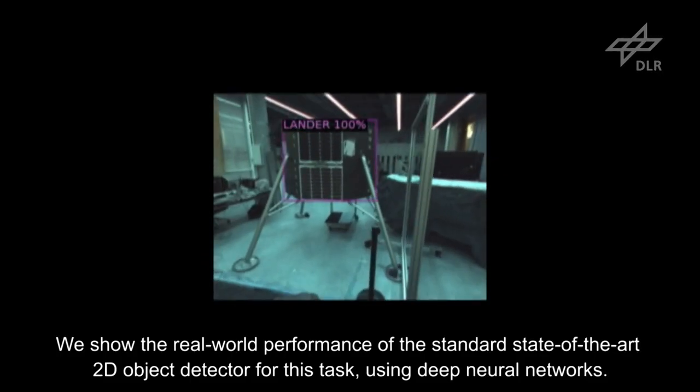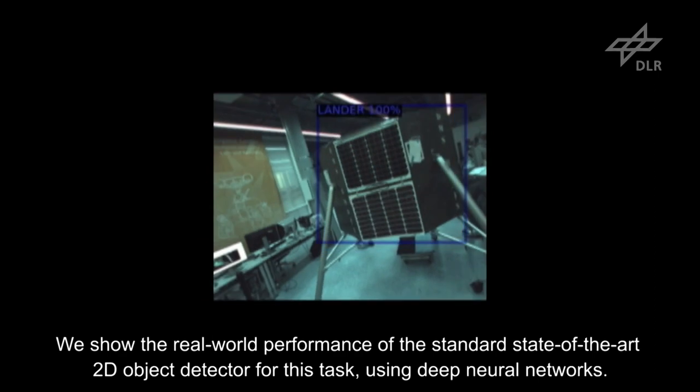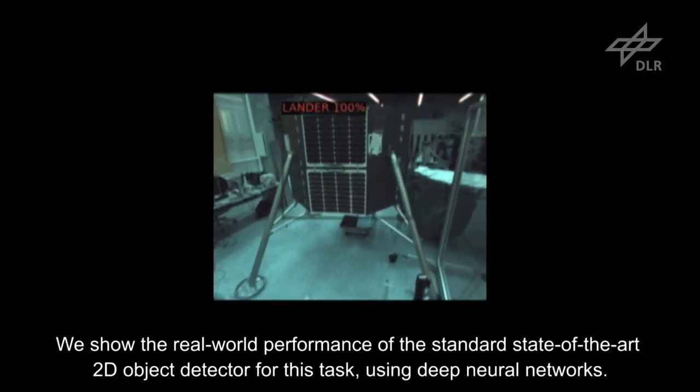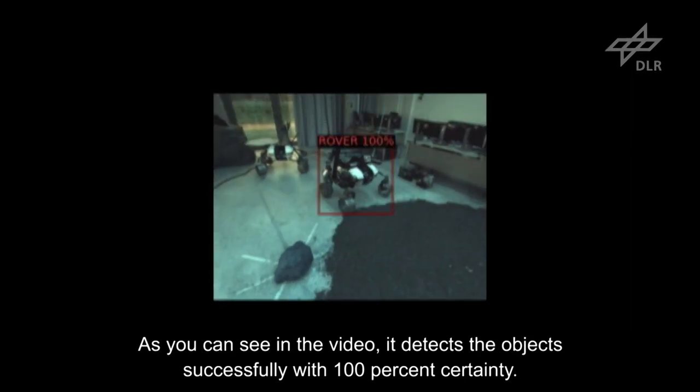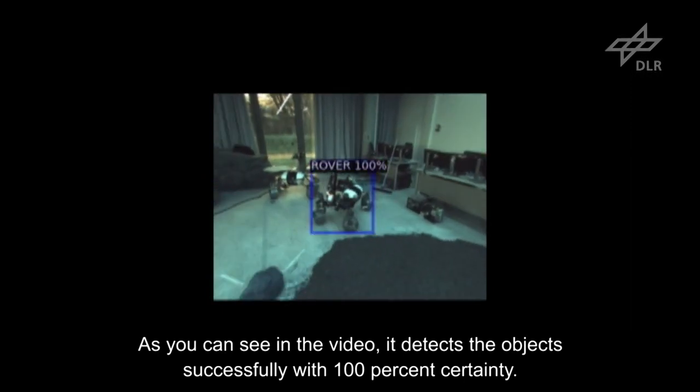We show the real-world performance of the standard state-of-the-art 2D object detector for this task, using deep neural networks. As you can see in the video, it detects the objects successfully with 100% certainty.